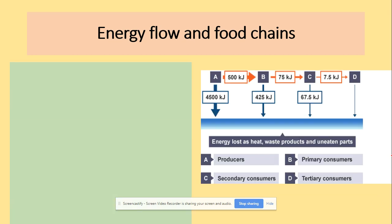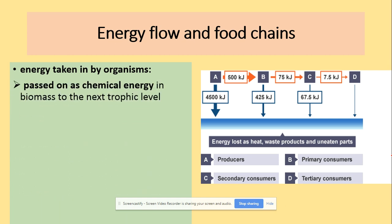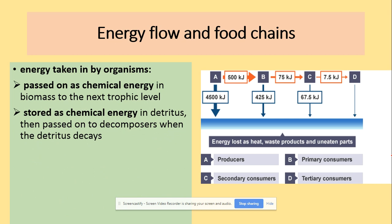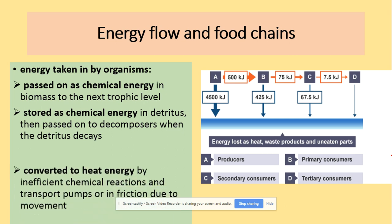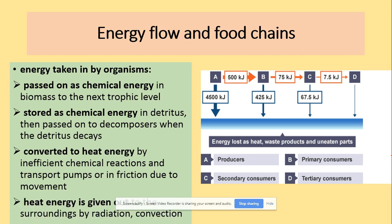In terms of energy taken in by organisms, energy is passed on as chemical energy in biomass to the next trophic level. It is stored as chemical energy in tissues and then passed on to decomposers when organisms die. It is also converted to heat energy by inefficient chemical reactions, transport pumps, or friction due to movement, and heat energy is given out to the surroundings by radiation and convection.